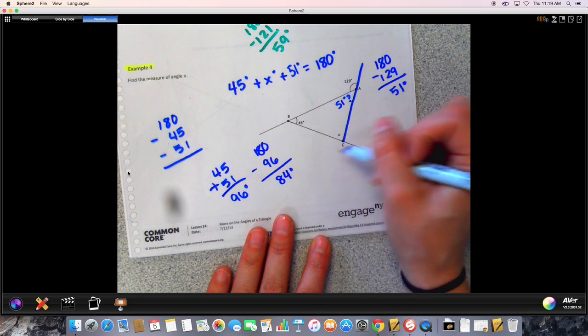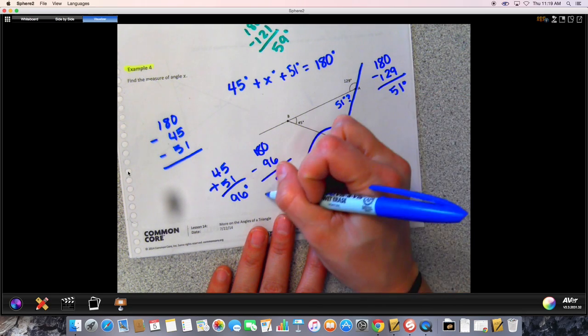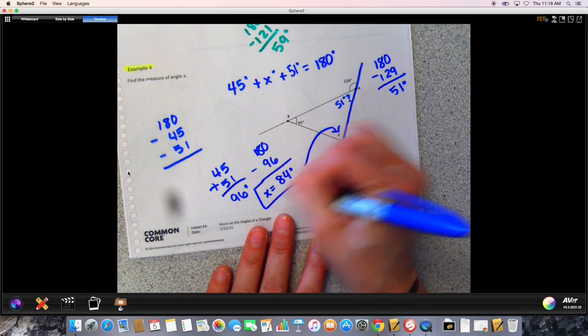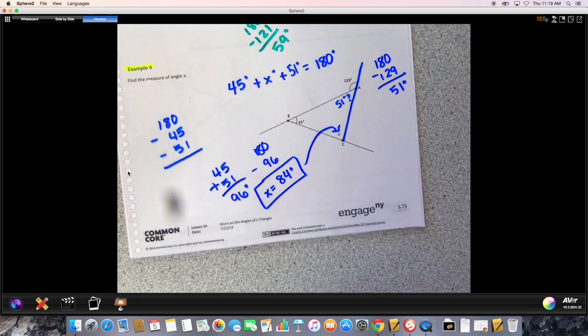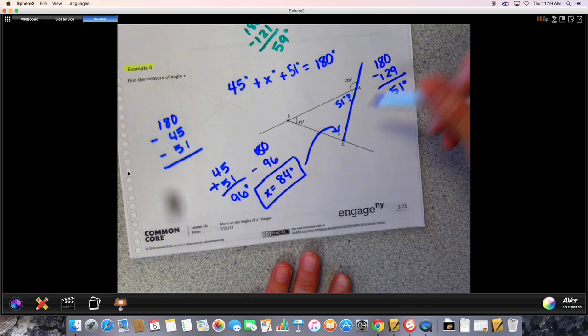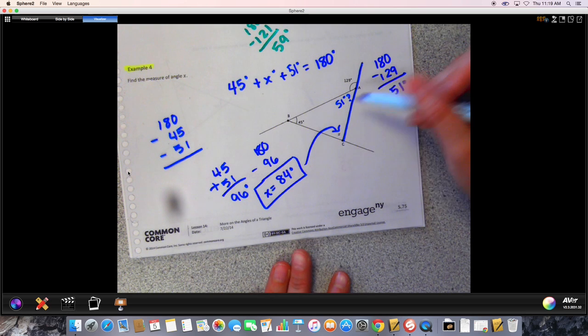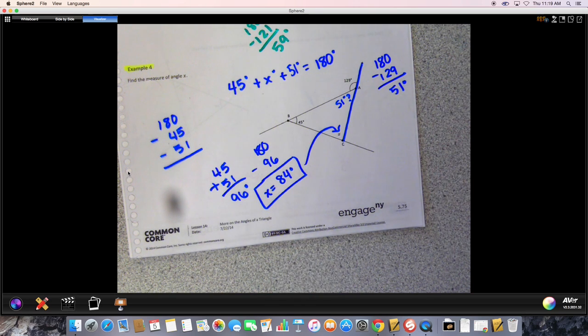All the problems in this lesson are similar to this. They're just the x is moved around and the degrees are different. It's just a matter of figuring out all the pieces of information you need. And again, we use 180 a lot for the measures of the interior angles of a triangle and also for the measure of a straight angle to help us out. Okay, so that's it for our lesson.